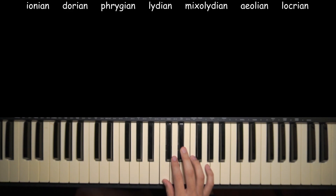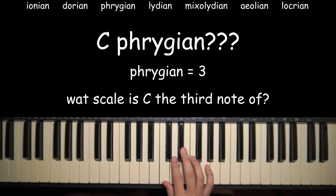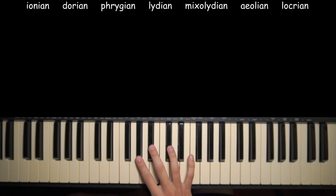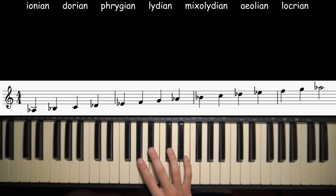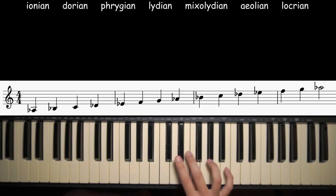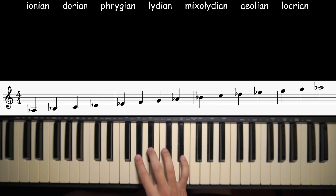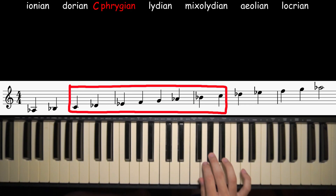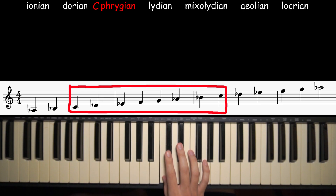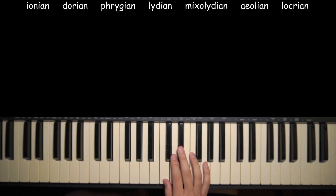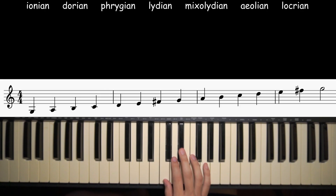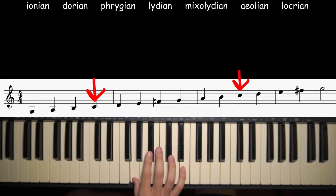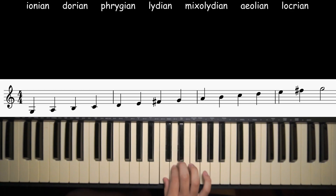Now let's say we wanted to find C Phrygian. What scale is C the third degree of? Because Phrygian's the third mode. A flat. So if we play the A flat major scale starting and ending on C, that's C Phrygian. C Lydian will be G major starting and ending on C — so that's G major, here's C Lydian.